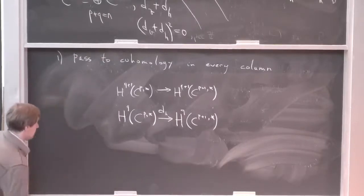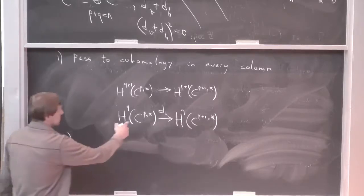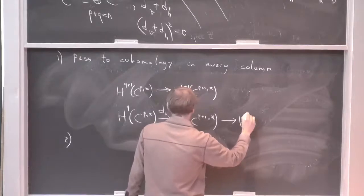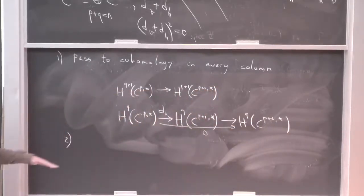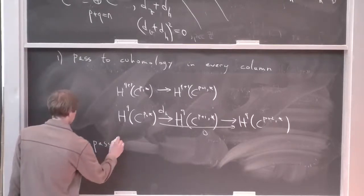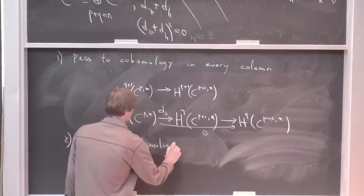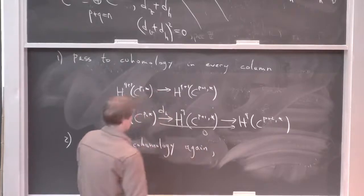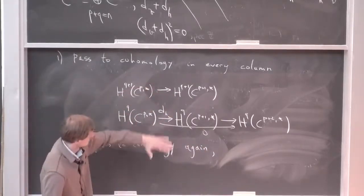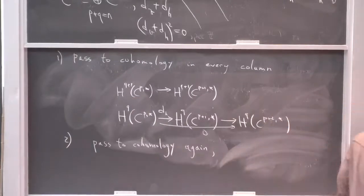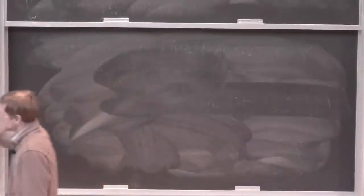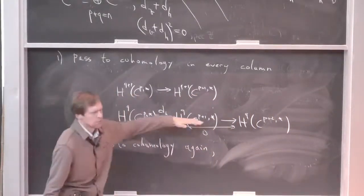After passing to cohomology again with respect to these new horizontal maps, you get another picture with objects on the grid. You can construct a new differential there with a diagonal direction. To represent cohomology classes in this complex, think about cocycle representatives: first, you need an element x that goes to zero under the vertical map—that's a representative of a class after taking vertical cohomology.